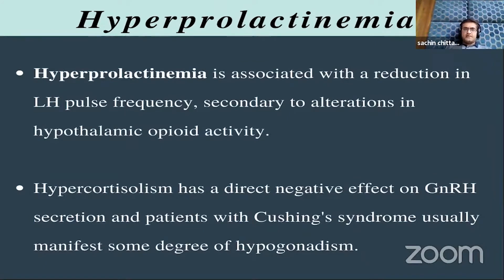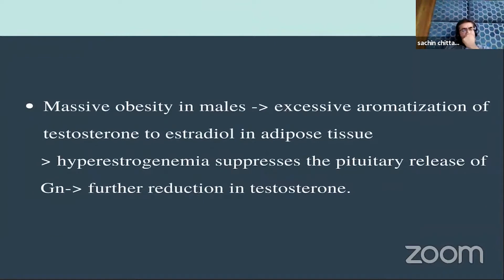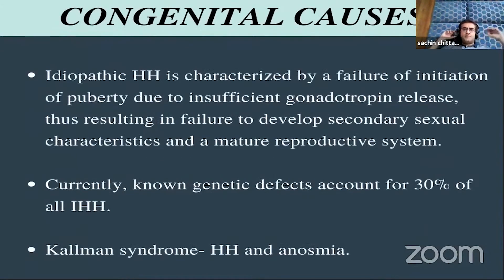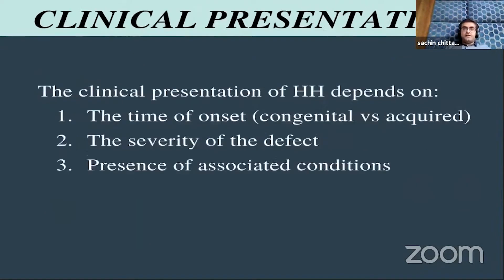Massive obesity, especially with insulin resistance, can affect the gonadal axis and present as hypogonadotropic hypogonadism. Congenital idiopathic hypogonadotropic hypogonadism is characterized by failure of initiation of puberty due to insufficient gonadotropin release, resulting in failure to develop secondary sexual characteristics and a mature reproductive system. Currently known genetic defects account for 30% of all IHH. Kallmann syndrome combines hypogonadotropic hypogonadism with anosmia. The clinical presentation depends on time of onset — congenital versus acquired — severity of the defect, and associated conditions.